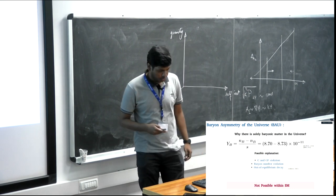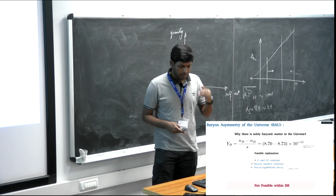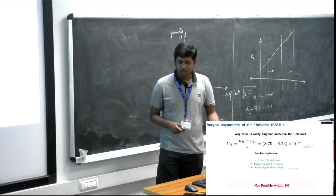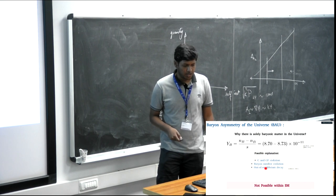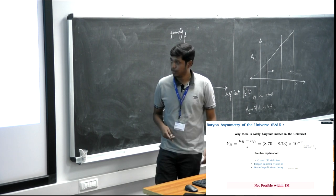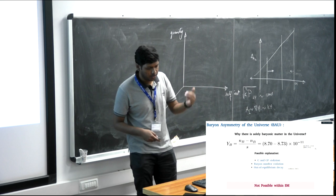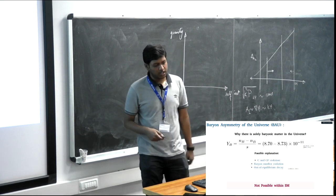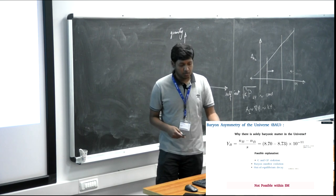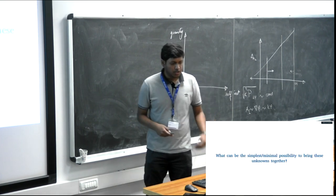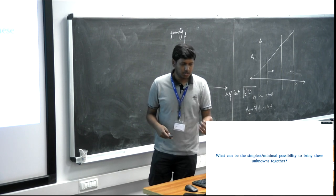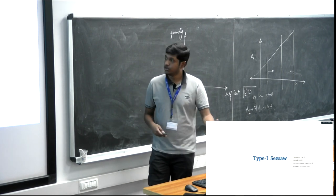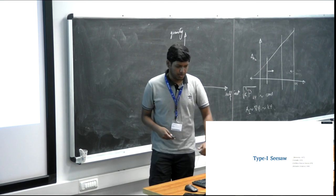Sakharov gave us conditions to generate sufficient baryon asymmetry: C and CP violation, baryon number violation, and out-of-equilibrium decay. Within the standard model framework, we cannot generate sufficient baryon asymmetry, so we again need to go beyond the standard model. The minimal possibility to bring all these unknowns together is Type I seesaw mechanism, where we add three right-handed neutrinos along with standard model particles.